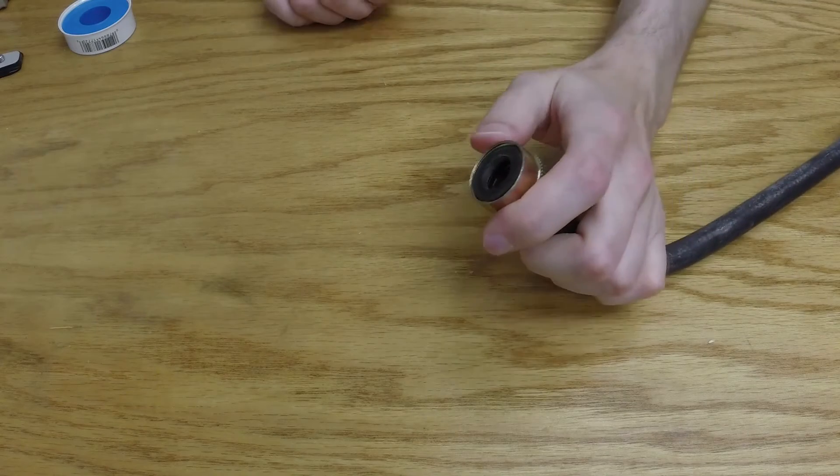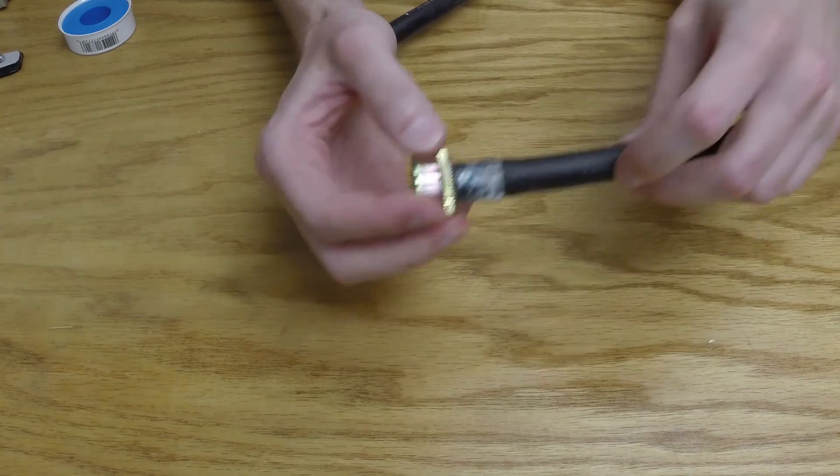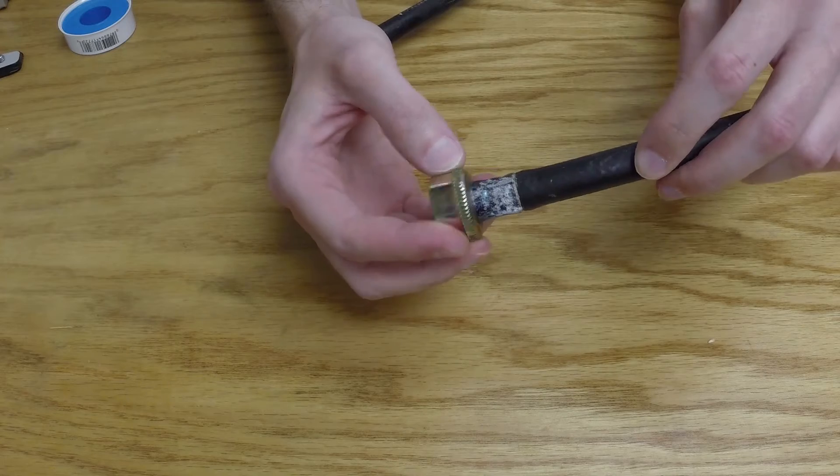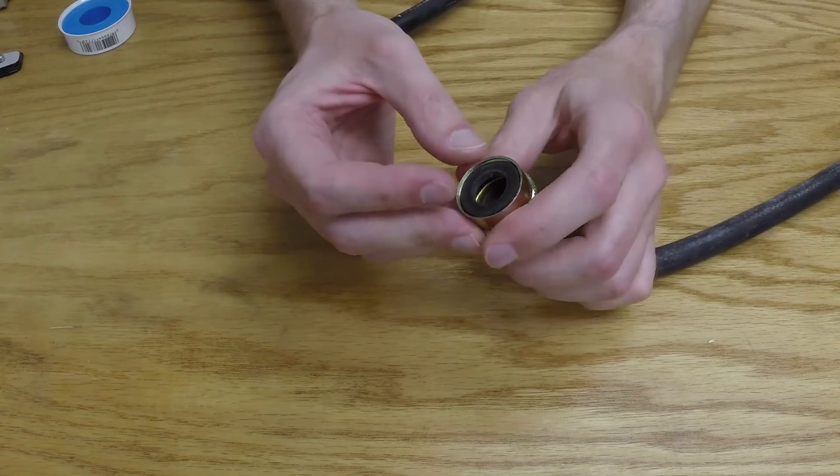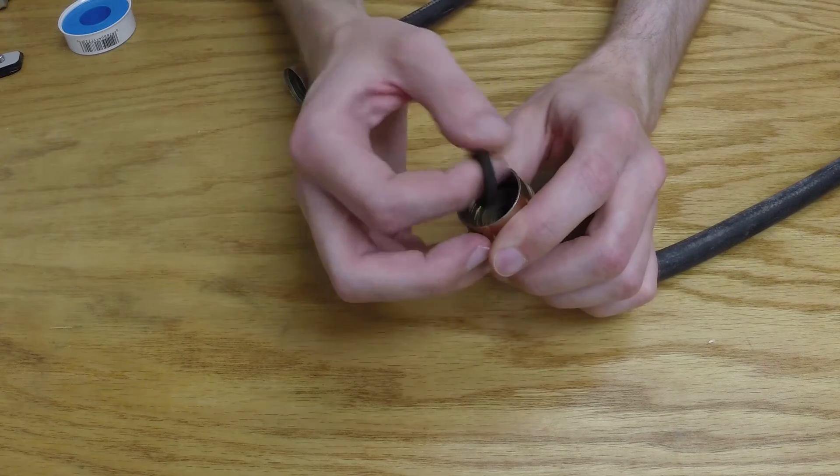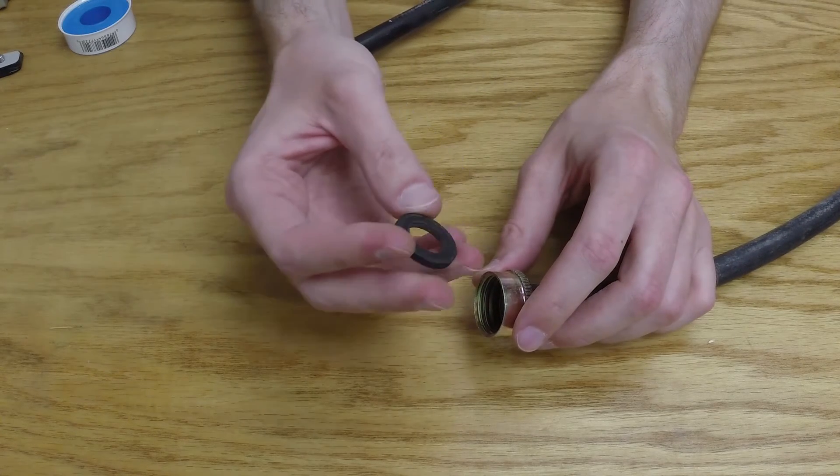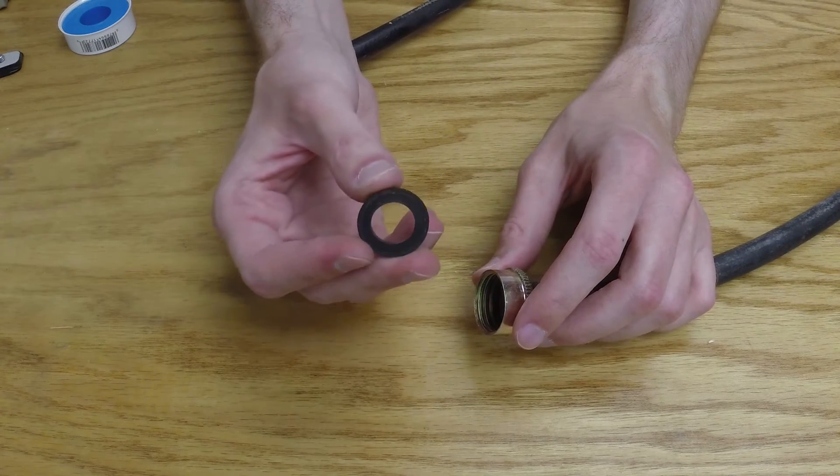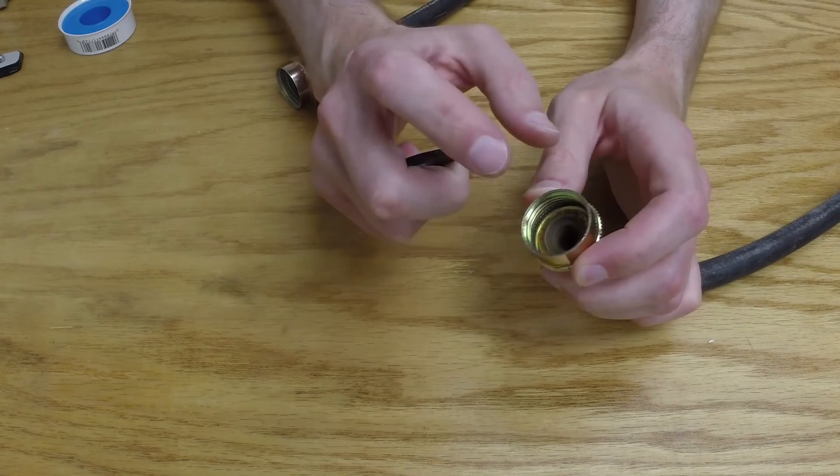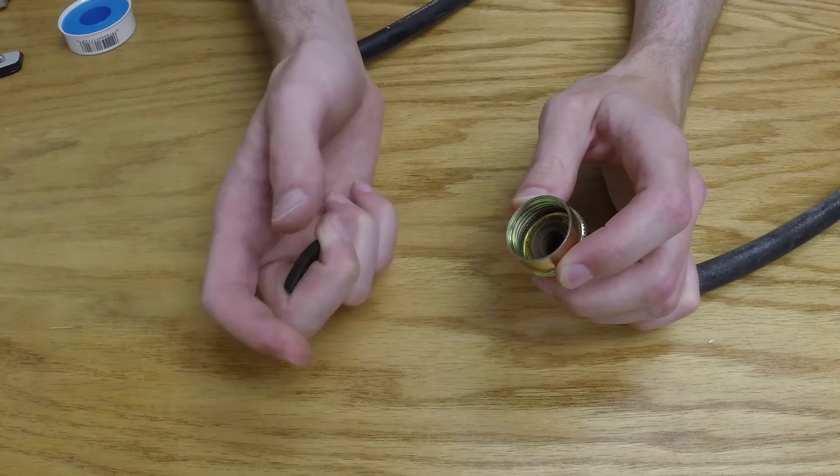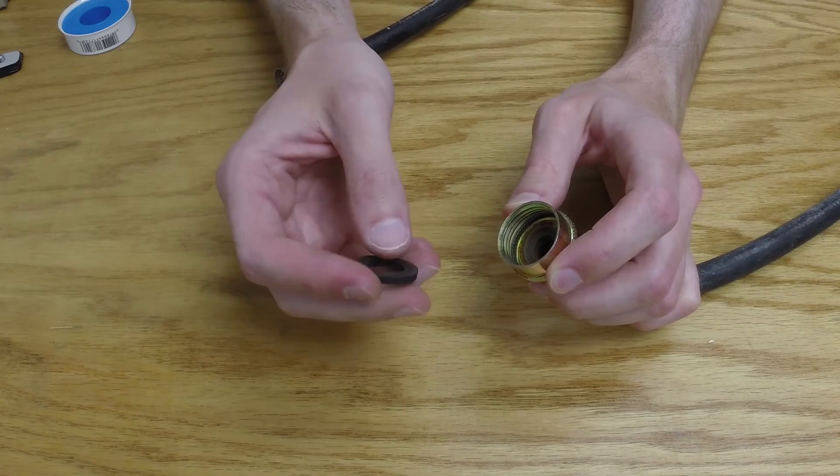For our last type of seal that we'll be talking about, we have a gasket seal. This is just a hose that you would hook up your washing machine with for the hot or cold water supply. With these types of hoses, you have a gasket. And this is a very popular kind of seal. We have two surfaces that we would like to mate together, the inside of this hose and the faucet that we're actually attaching this to.